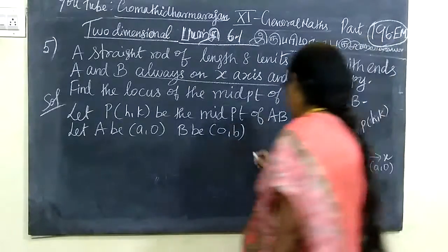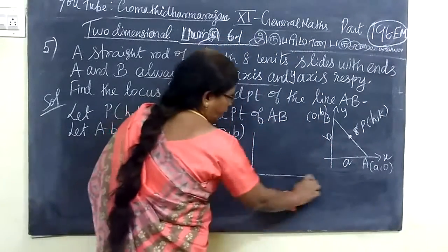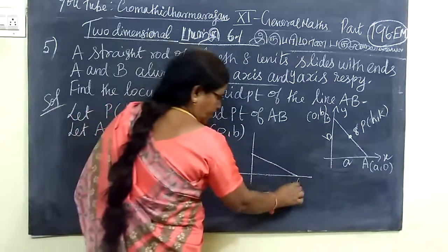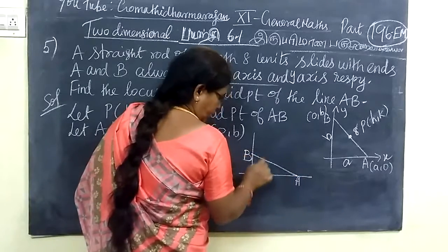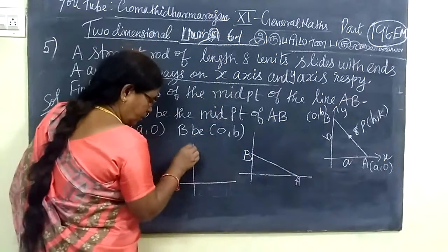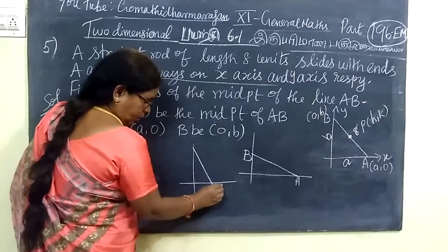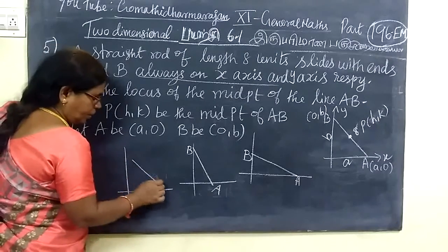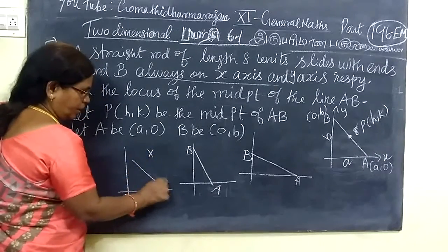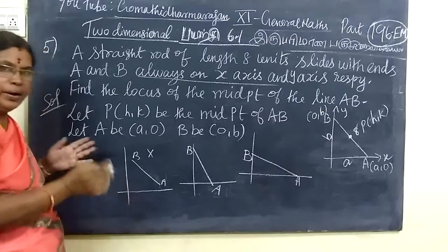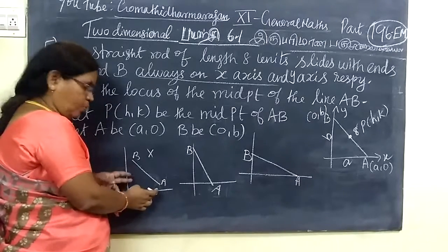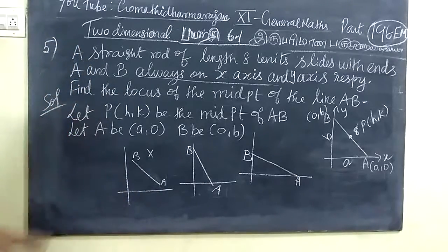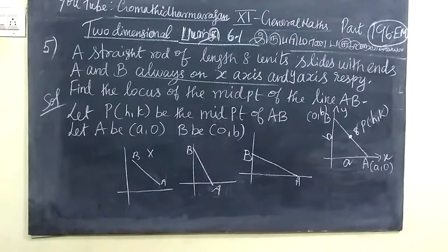The rod slides so that it is always on the endpoints. This one is A, this is B. The rod moves to different positions, always keeping endpoints on the axes. This is the midpoint.